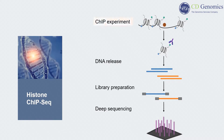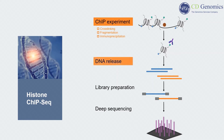In the ChIP experiment, the DNA binding protein is cross-linked to DNA, and the chromatin is sheared into 200–600 bp fragments. An antibody specific to the protein of interest is used for immunoprecipitation. Subsequently, the cross-links are reversed and the DNA is released. Library preparation consists of end repair, adapter ligation, and library amplification. Finally, qualified libraries are subjected to deep sequencing and data analysis.